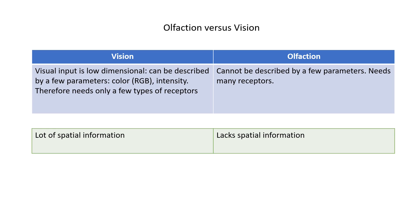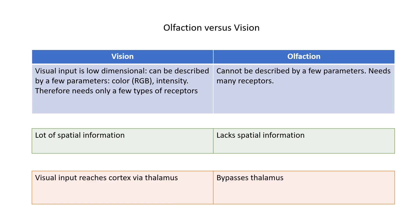There is also an architectural difference between vision and olfaction. In vision, as in most other senses, information from the sensory organs reaches the thalamus and then goes to the cortex. But in olfaction, information from the sensory organ — the nose — goes directly to the cortex without going through the thalamus.